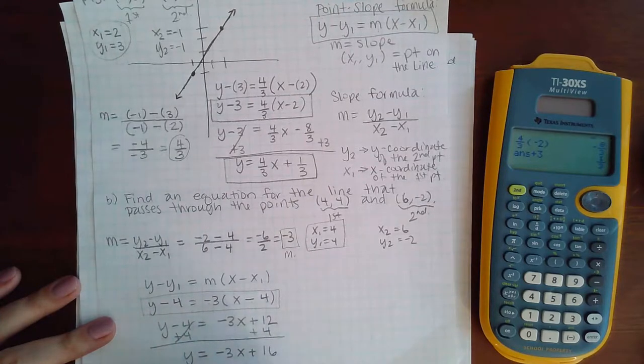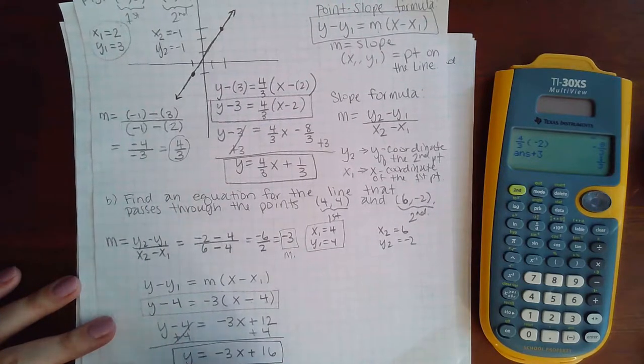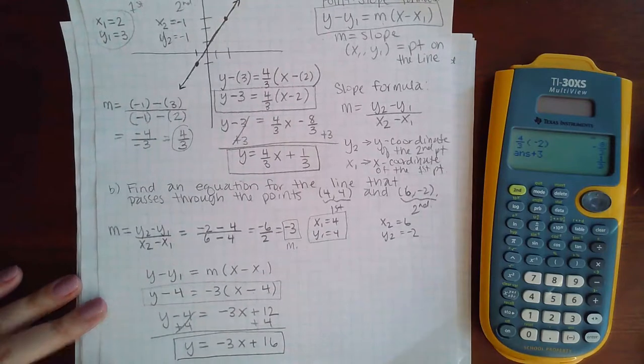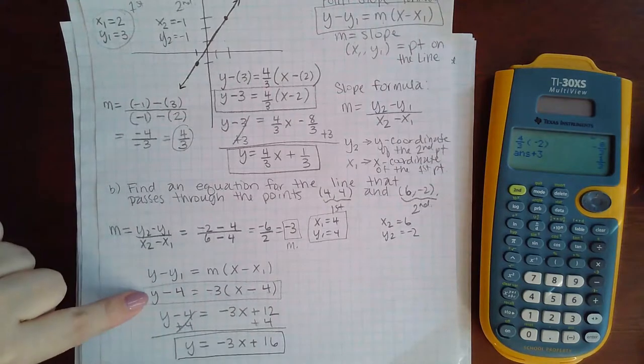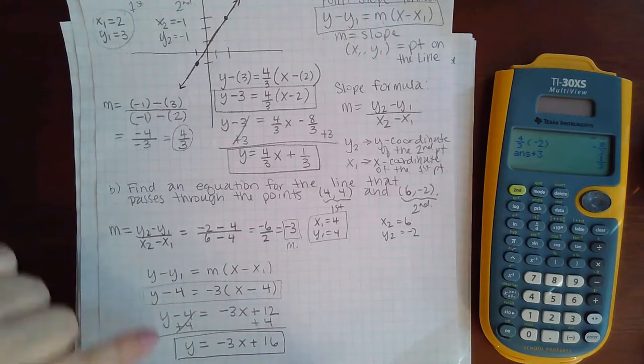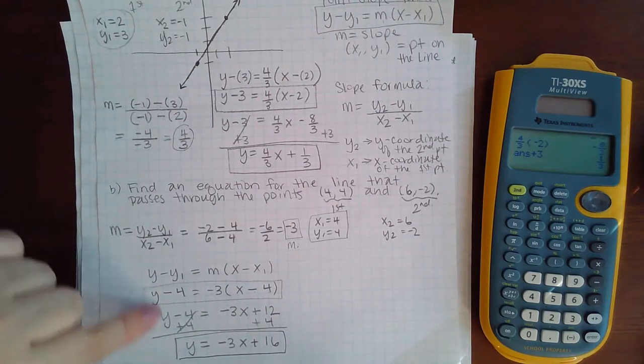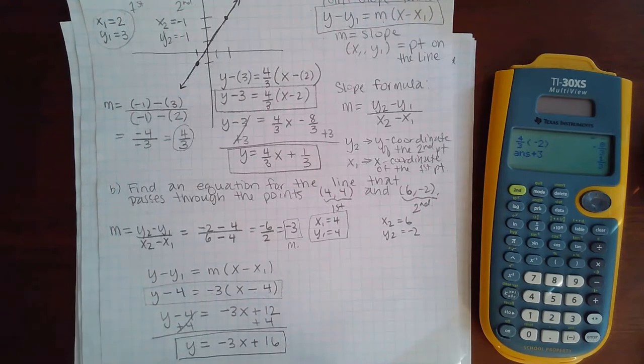And this is the slope-intercept form of the line. It's easier to graph a line when it's in this form than it is to graph a line that is in that form, which is the reasoning behind most problems wanting you to give the answer in this form.